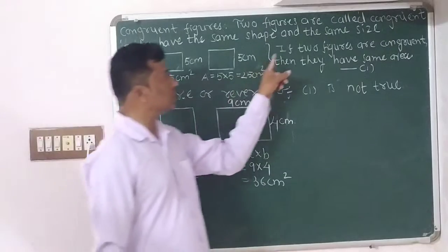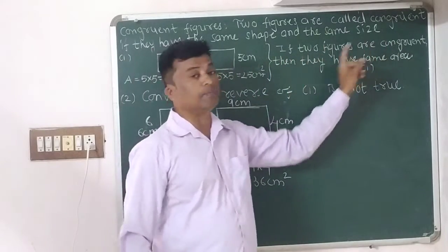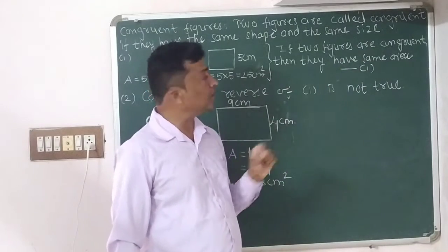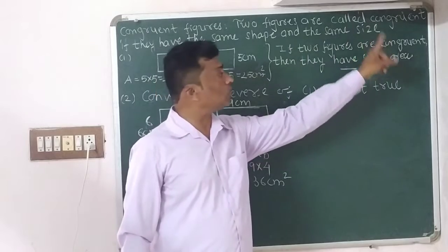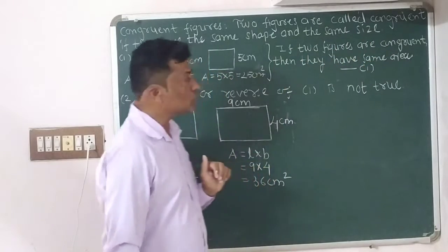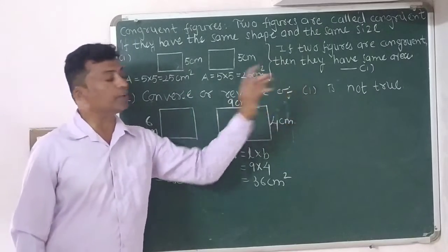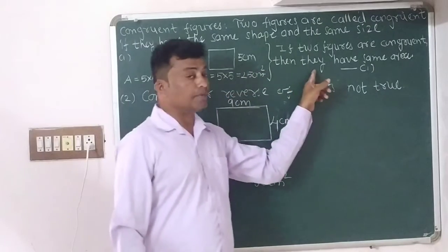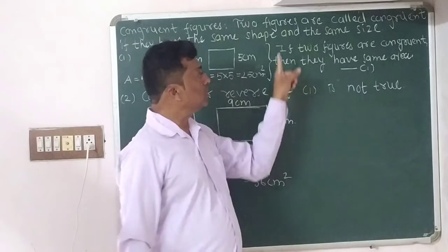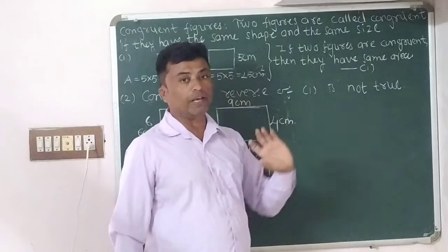The final conclusion is statement number one: if two figures are congruent, then they have the same area. However, the converse or reverse of statement one is not true. If two figures are congruent, then they have same area — this is true. But the reverse is not true.